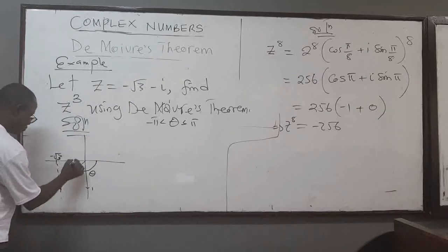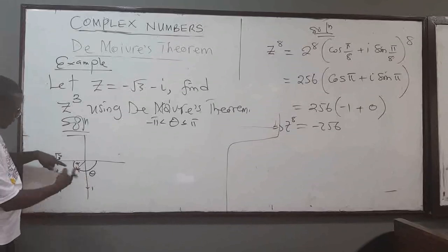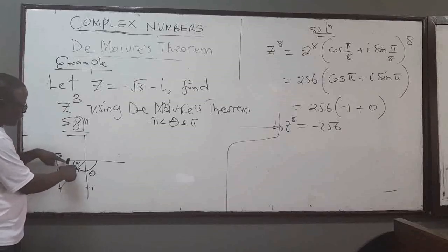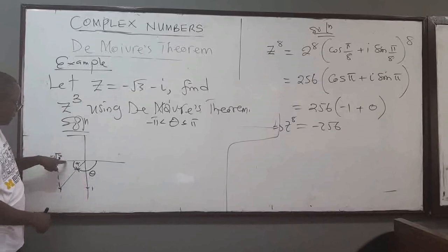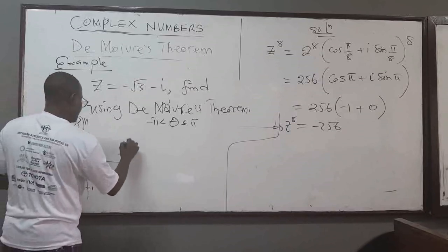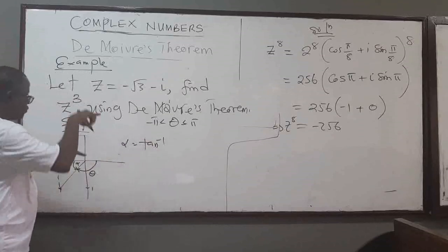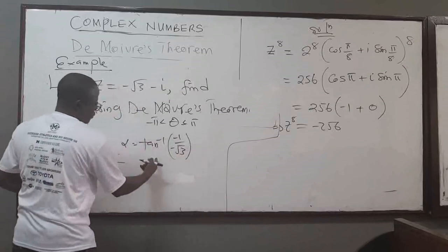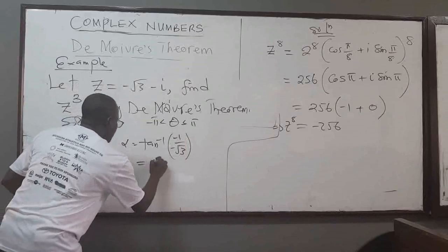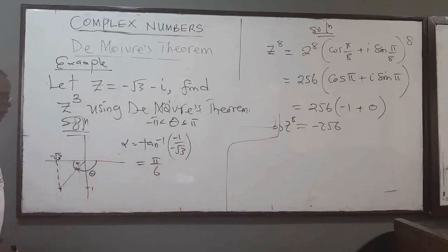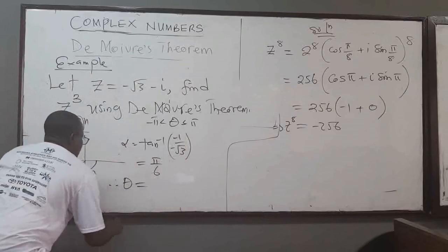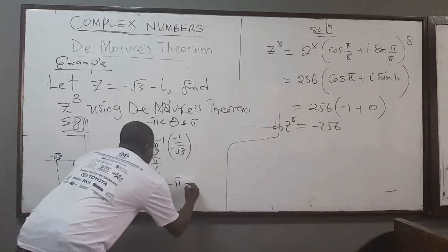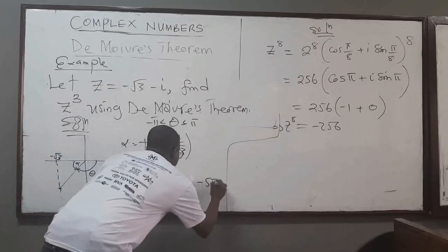What you do is compute the reference angle alpha, where tan(alpha) = |y/x| = |-1 / -√3| = 1/√3, which gives alpha = π/6. Therefore, the angle theta is negative π plus π/6, which equals negative 5π/6.